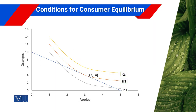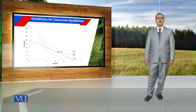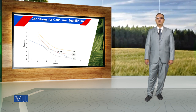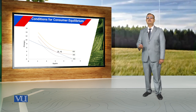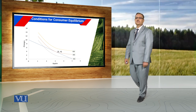As the objective of the consumer is to maximize his satisfaction under a given income constraint, the consumer is not in a position to achieve the level of satisfaction denoted by IC3 indifference curve. Similarly, there are certain combinations on indifference curve IC1 that are attainable under a given budget constraint, but those combinations are not maximizing the satisfaction of the consumer. A consumer can maximize his satisfaction under a given budget constraint by choosing a combination that lies on IC2 indifference curve.